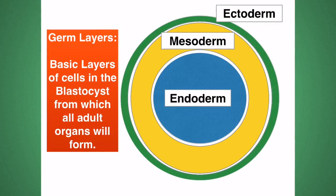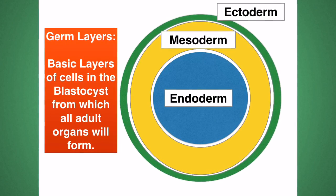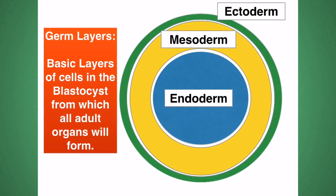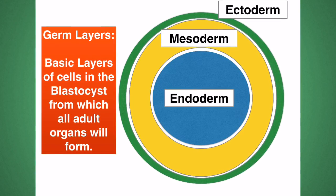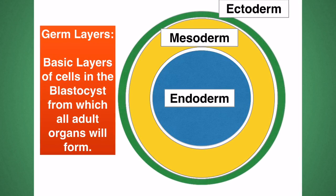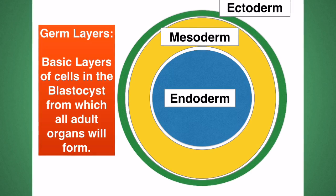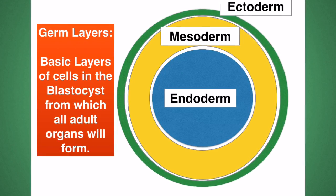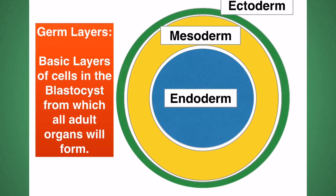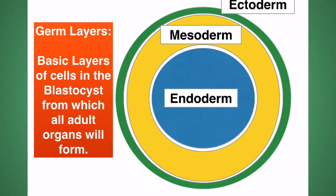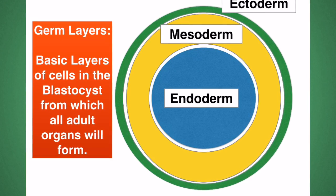The inner cell mass of the blastocyst will form germ layers — these are basic layers of cells from which all adult organs and tissues will form. You have to know each of the germ layers, and we always start from the inside out: endoderm, mesoderm, ectoderm. Just remember: endo, meso, ecto.